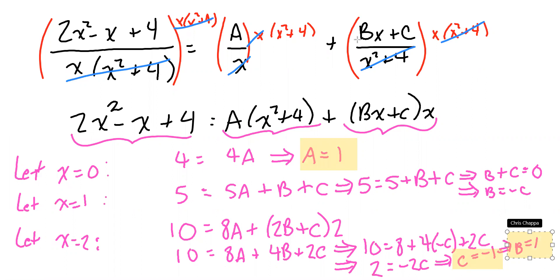So anyway, we got A equals 1, b equals 1, c equals negative 1. That means the following.